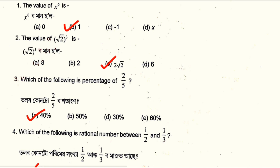Which of the following is the percentage of 2/5? The options are: Option A = 40%, Option B = 50%, Option D = 30%, Option D = 60%. The answer is Option A = 40%, because 2/5 multiplied by 100% gives 40%.